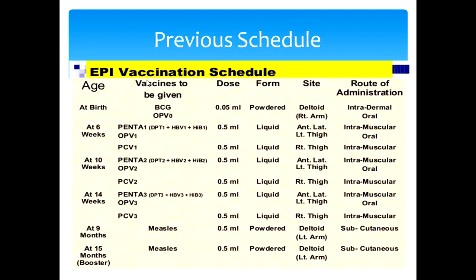The EPI vaccination schedule has different visits at different ages: at birth, 6 weeks, 10 weeks, 14 weeks, 9 months, and 15 months. At birth, we give BCG — 0.05 ml dose, given intradermally in the right deltoid arm — and OPV0 as oral drops. We are now also giving hepatitis B at birth.